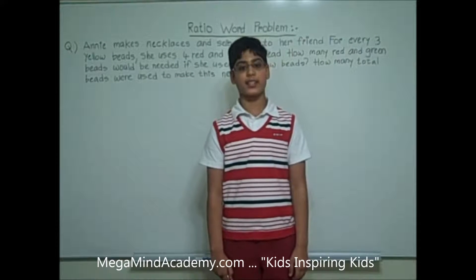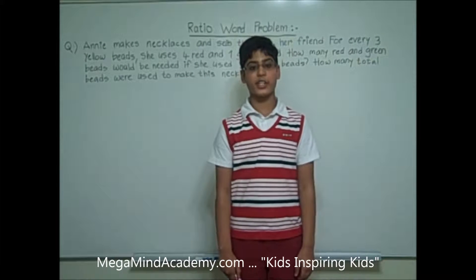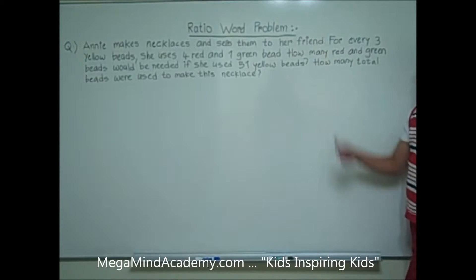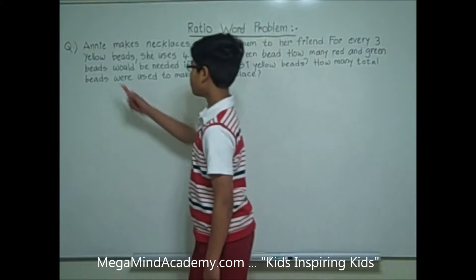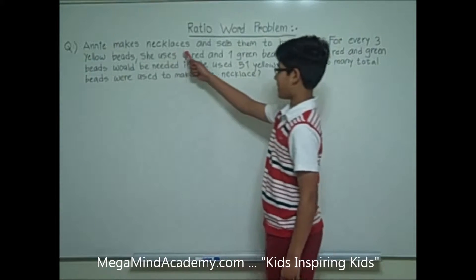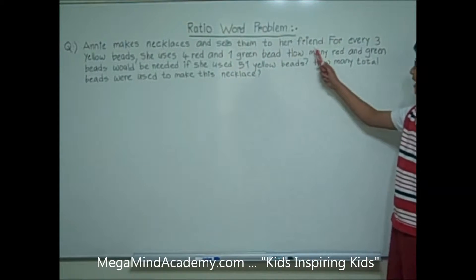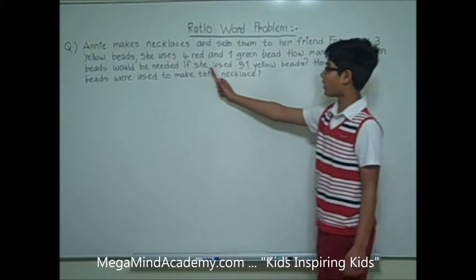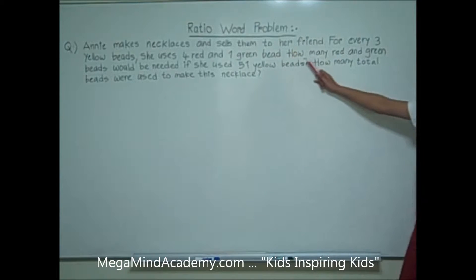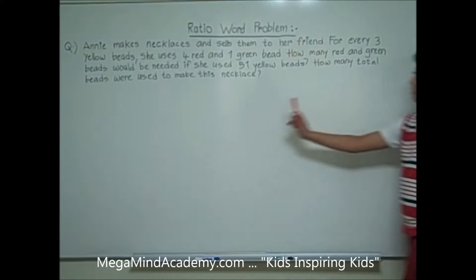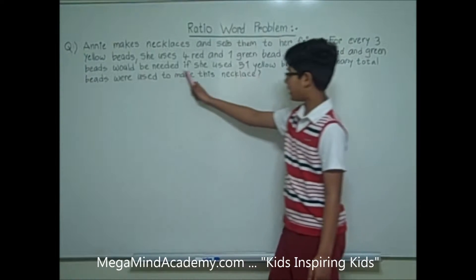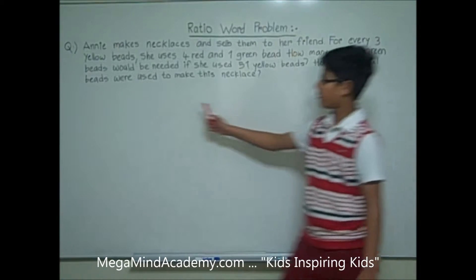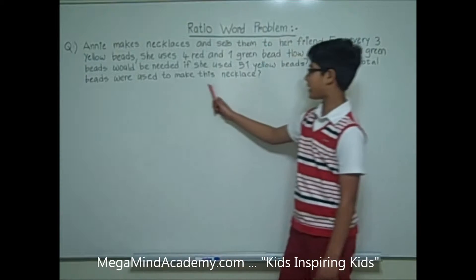Hi! Today we're going to learn about Ratio Word Problems. Let's say we have a problem like: Annie makes necklaces and sells them to her friend. For every 3 yellow beads, she uses 4 red and 1 green bead. How many red and green beads would be needed if she used 51 yellow beads? How many total beads were used to make this necklace?